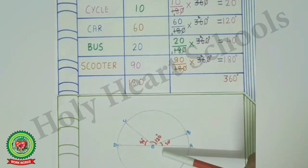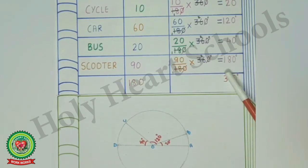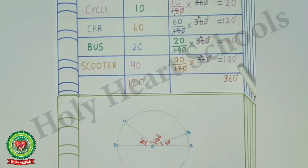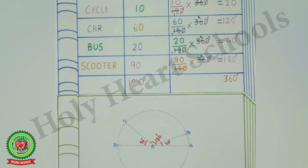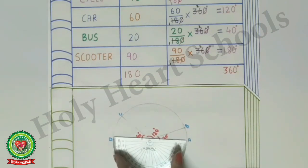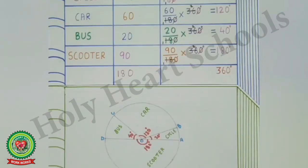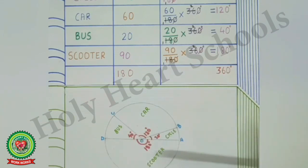The next angle is 180 degrees. Students, remember: the last angle of the pie graph should automatically equal the remaining angle — here it is 180 degrees. We can verify that the last angle is indeed 180 degrees. Also remember, we must give naming to the pie graph and write the given information within each section of the pie graph.